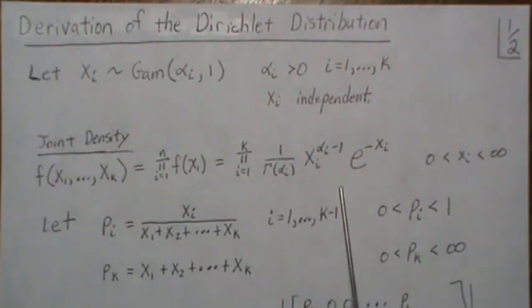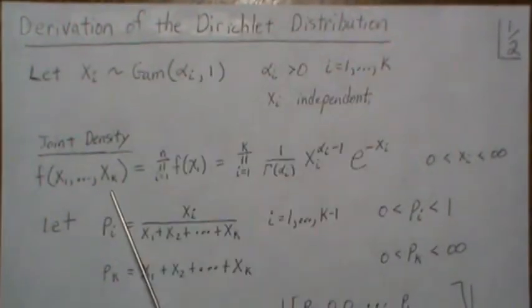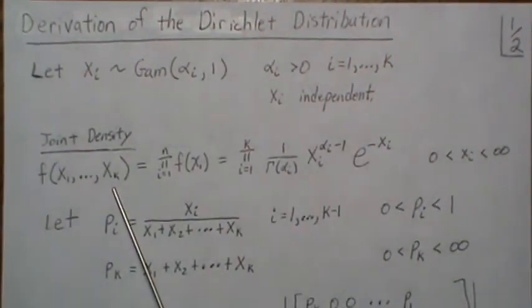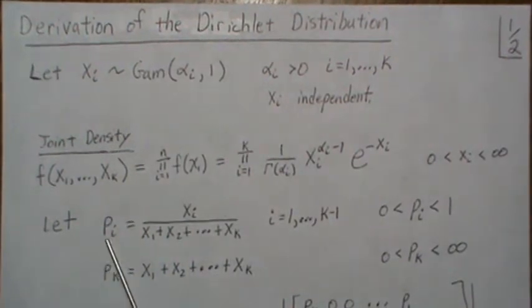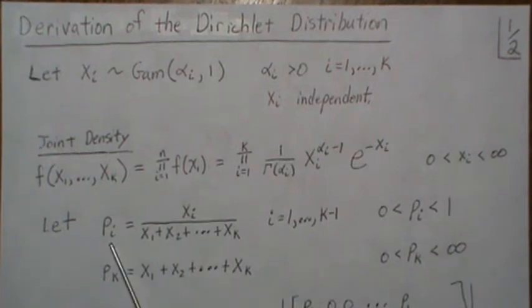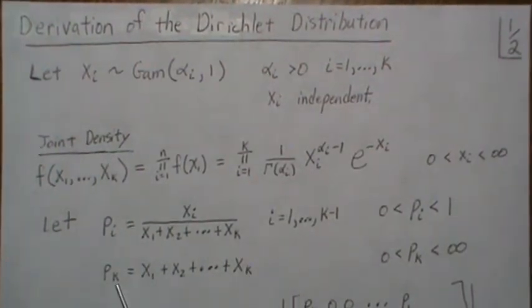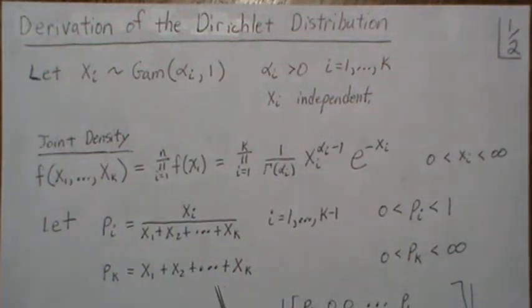Now let's do a variable transformation. There's k variables so we need k variables in our multivariate transformation. The first k minus one variables will be set up where it's Xi divided by the sum of all the X's, and the kth variable PK is just the sum from X1 to XK.